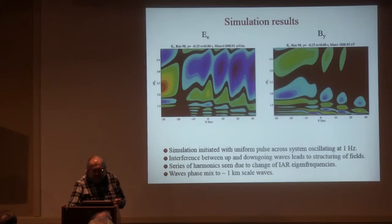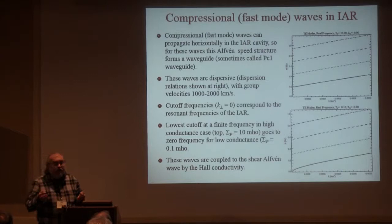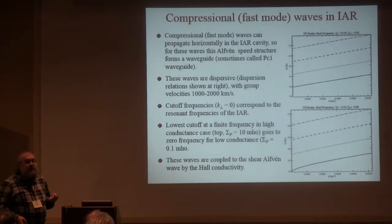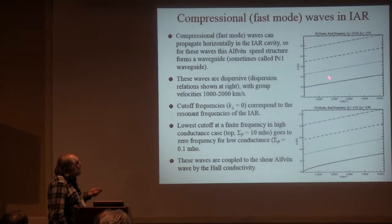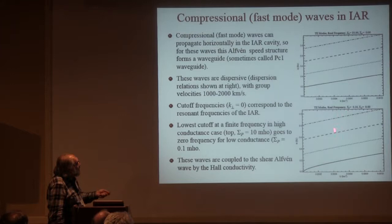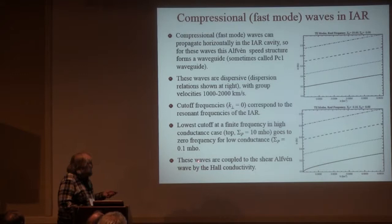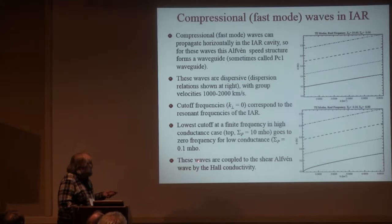We've concentrated on the shear wave in the IAR, but fast mode waves can also be trapped in the IAR. They can propagate across magnetic field lines — the fast mode wave propagates isotropically, so those waves are not just trapped at a single frequency; they can propagate horizontally. They have a dispersion relation — calculated here for a high-conductivity and a low-conductivity case. Taking the slope of these omega-versus-K curves, you see group velocities of about a thousand or a couple thousand kilometers per second. These sorts of waves can propagate along field lines, and the important point is that these waves couple to the shear Alfvén wave by Hall conductivity.